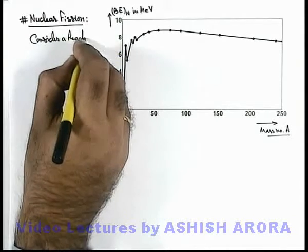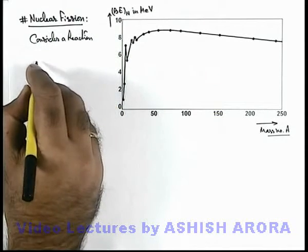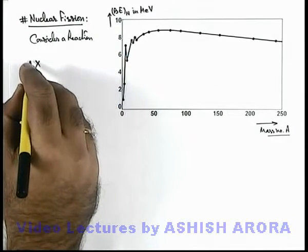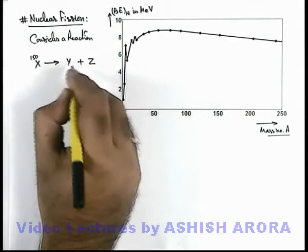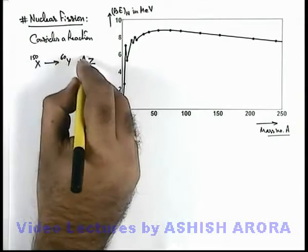In which nuclei X-150 splits into 2 nuclei Y and Z, where Y is 60 and Z is 90.